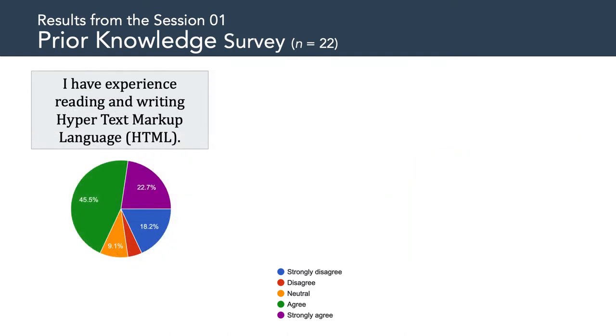So the next set of questions asked about your familiarity with various web technologies, specifically HTML, CSS, and JavaScript. And here we see a little bit of a split, which is good for me to know early in the semester. If we look at the HTML question, we can see that roughly 67% or 15 of you agreed or strongly agreed that you have some experience reading and writing HTML. That said, another seven of you reported being neutral or disagreeing. My takeaway here is that there's probably someone just like you in this course of 22 students.